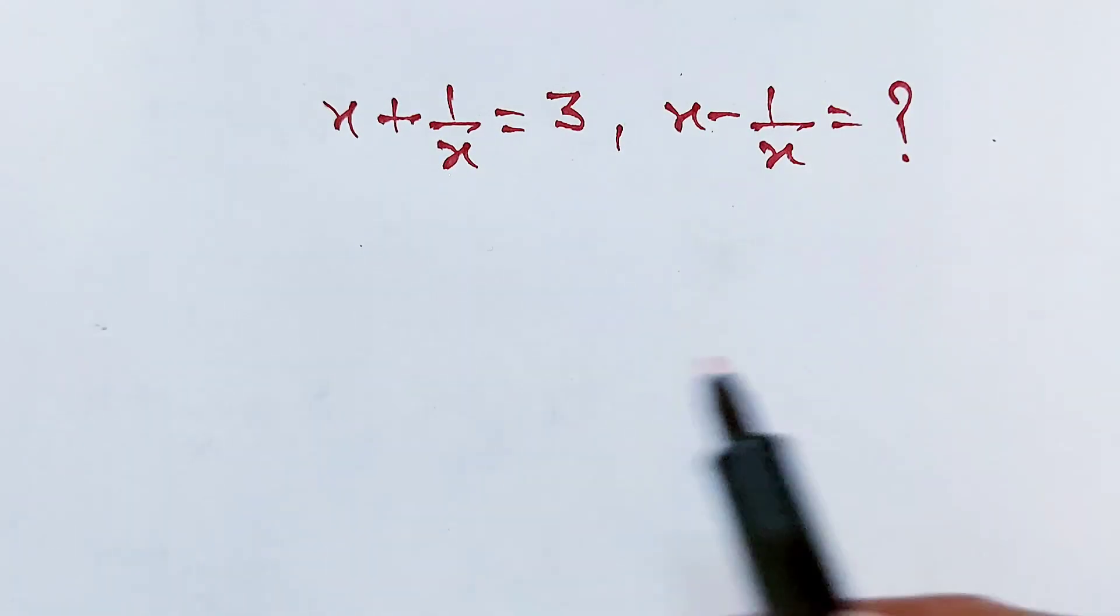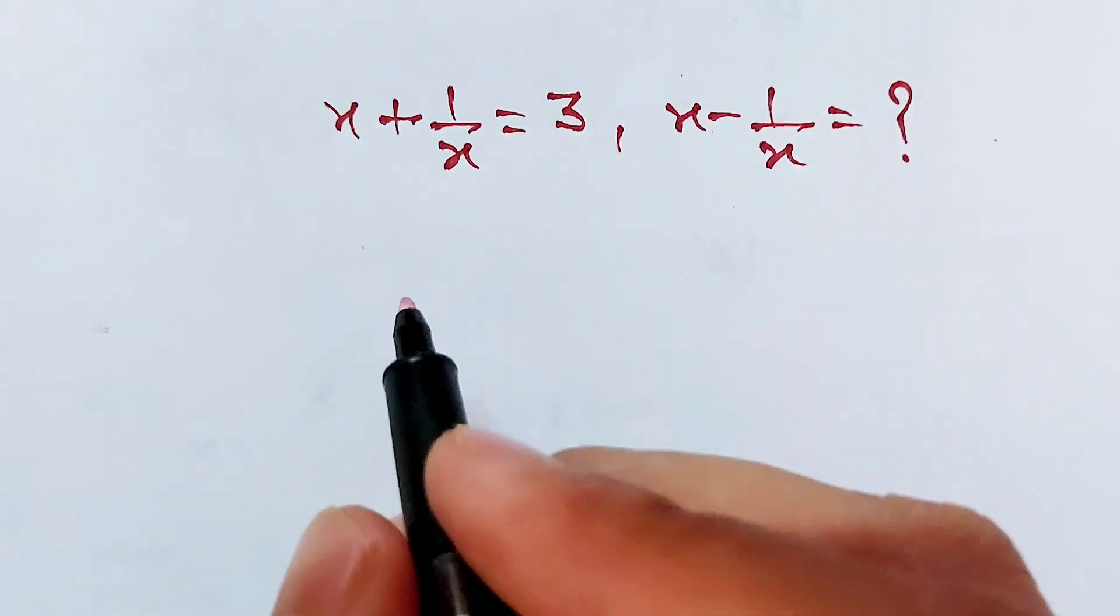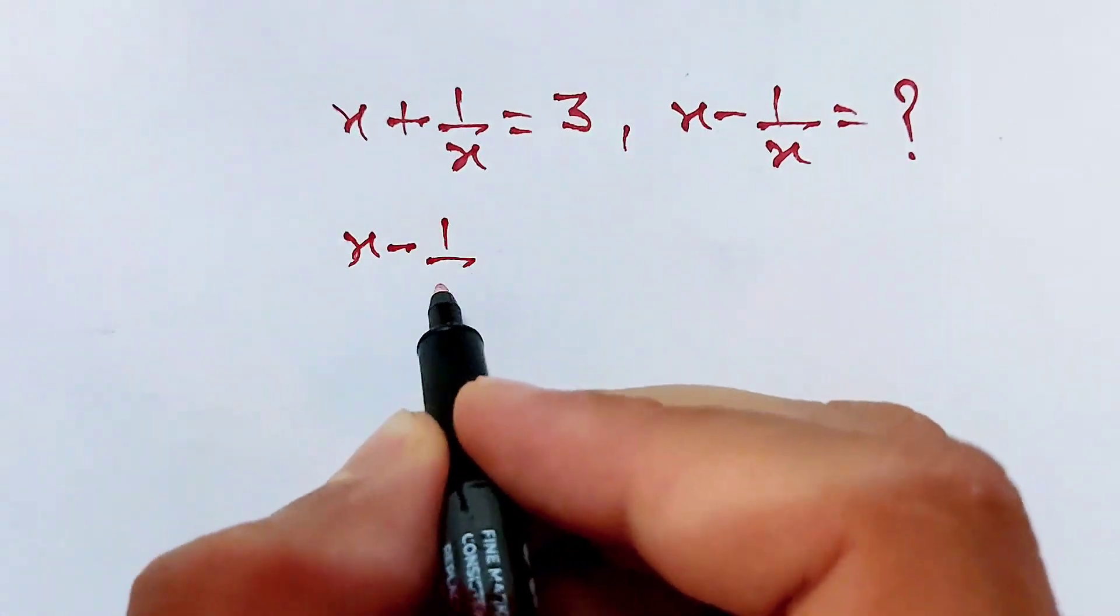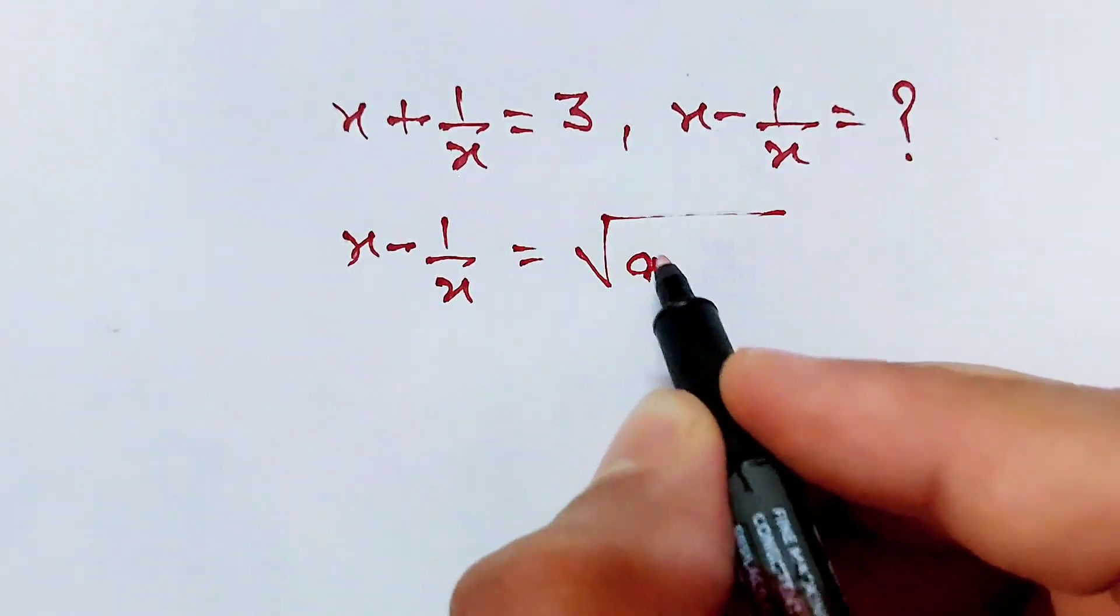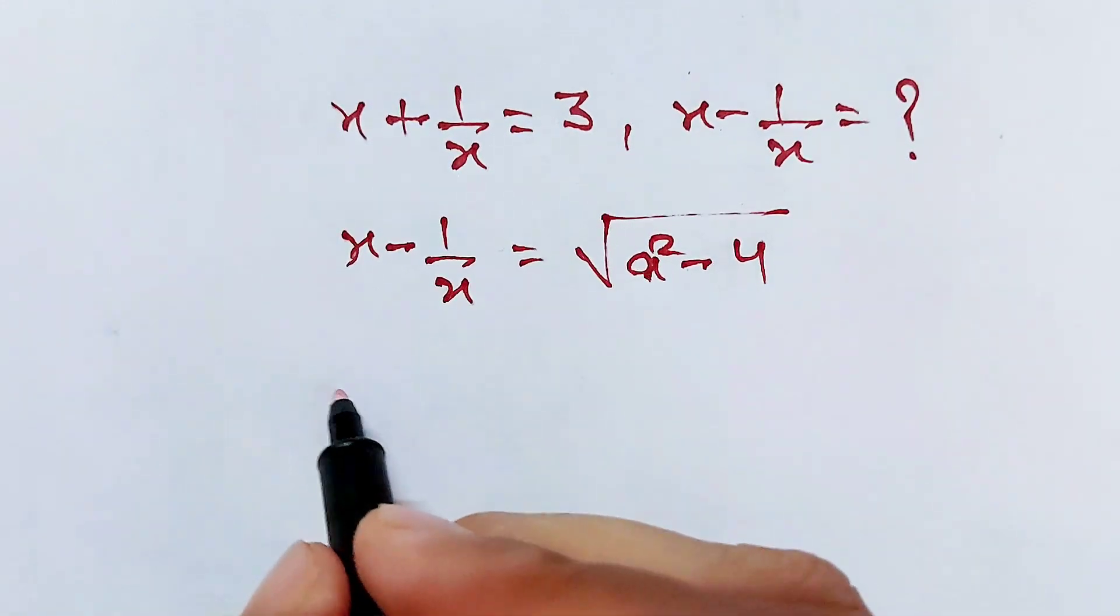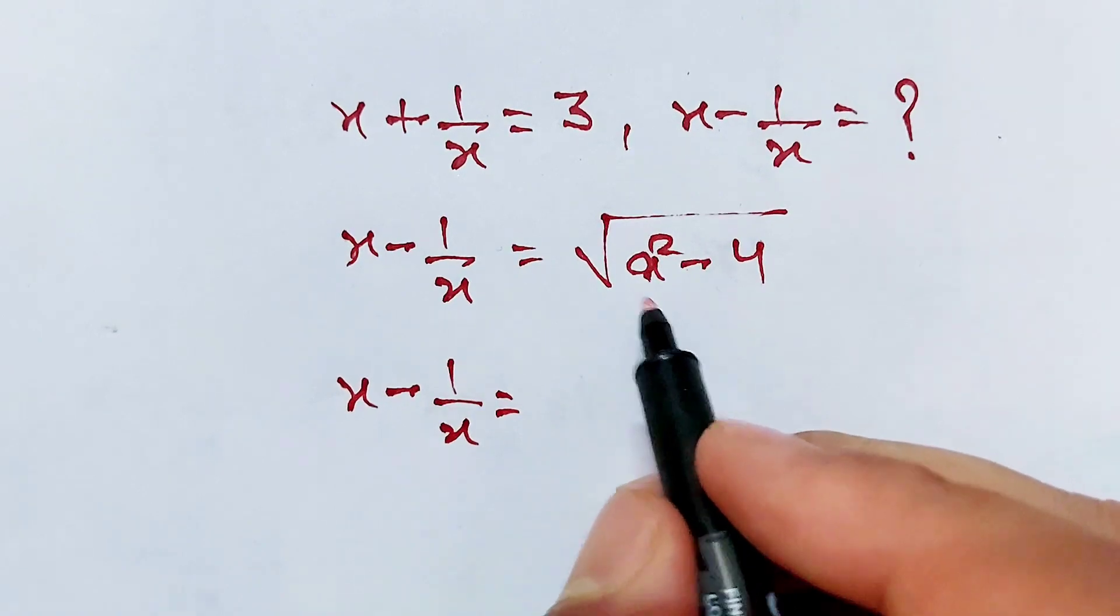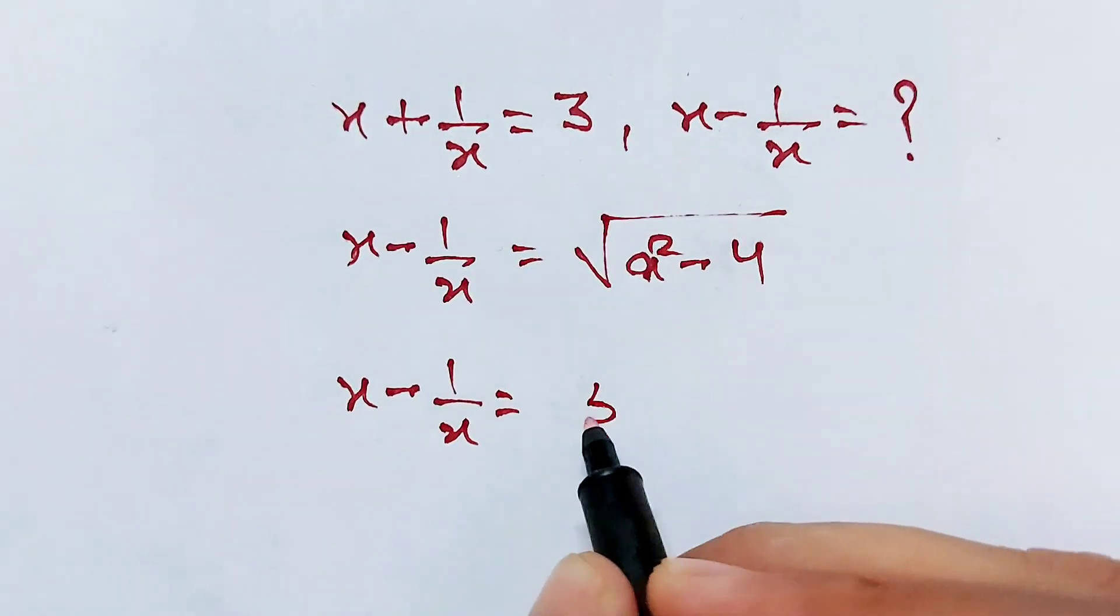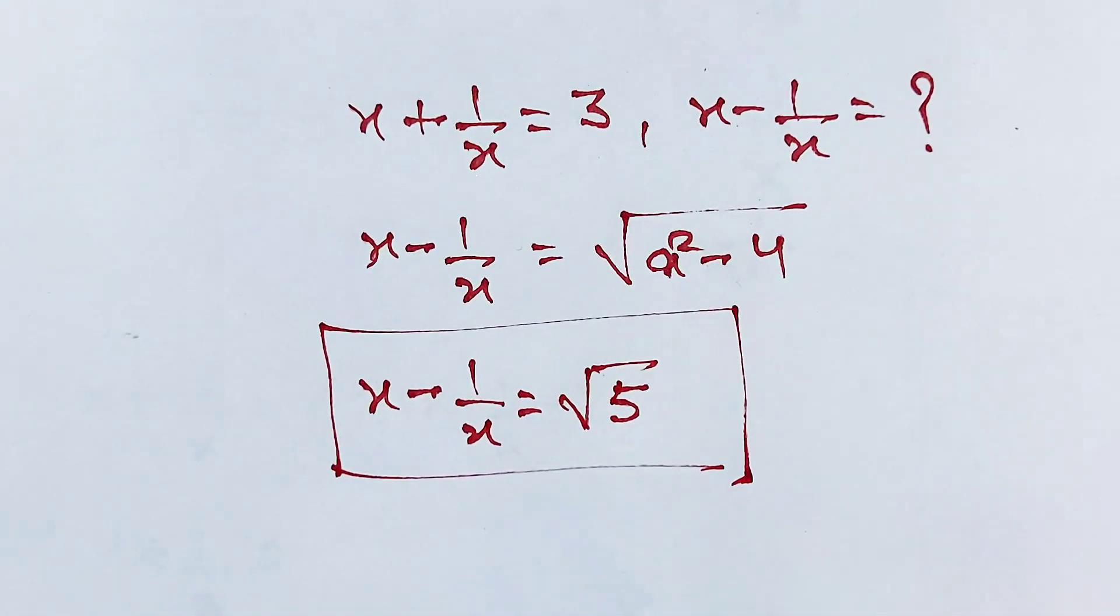And if you want to solve these kinds of questions instantly, there is a trick: x minus 1 over x is equal to square root of a square minus 4. Here a is equal to 3, so x minus 1 over x equals square root of 9 minus 4, which equals 5. And square root, so you can see our answer is the same.